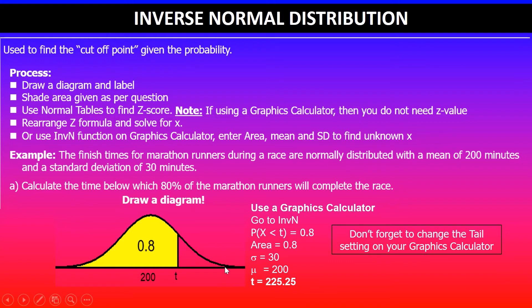Otherwise if you go for right tail, 80% will be somewhere here which will give you a value below 200 which will be incorrect in this case. Once you've got that then you write the answer in context: below 225.25 minutes, 80% of the marathon runners will complete the race.